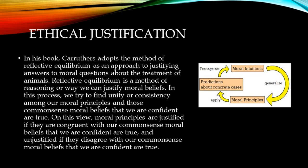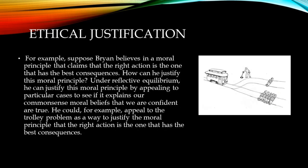In his book, Carruthers adopts the method of reflective equilibrium as an approach to justifying answers to moral questions about the treatment of animals. Reflective equilibrium is a method of reasoning — a way we can justify moral beliefs. In this process, we try to find unity or consistency among our moral principles and those common-sense moral beliefs that we are confident are true. On this view, moral principles are justified if they are congruent with our common-sense moral beliefs that we are confident are true, and unjustified if they disagree with those beliefs.